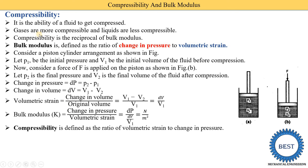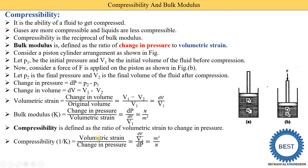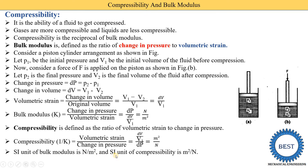Compressibility is the reciprocal of bulk modulus and is defined as the ratio of volumetric strain to change in pressure. So compressibility equals (dv/v1) divided by dp. Its unit is meter squared per newton, since volumetric strain is unitless and pressure has units of newton per meter squared, giving meter squared per newton. The SI unit of bulk modulus is newton per meter squared and the SI unit of compressibility is meter squared per newton.